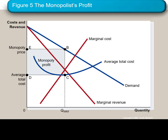That price minus average total cost — B minus C — times the quantity, which is the distance between C and D that the monopolist sells, corresponds to the monopolist's profit. That's the height of that rectangle times its width.